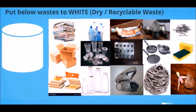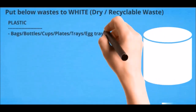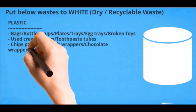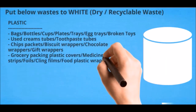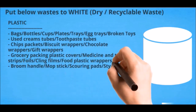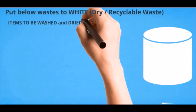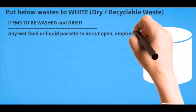Here is the full list of wastes for white bins. Plastic: bags, bottles, cups, plates, trays, egg trays, broken toys, used cream tubes, toothpaste tubes, chips packets, biscuit wrappers, chocolate wrappers, gift wrappers, grocery packing plastic covers, medicine and tablet strips, foils, cling films, food plastic wrappers, broom handle, mop stick, scouring pads, styrofoam products. Items to be washed and dried: any wet food or liquid packets to be cut open, emptied, rinsed, and dried.